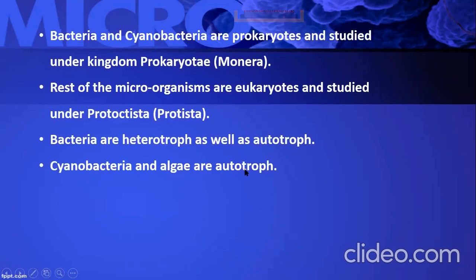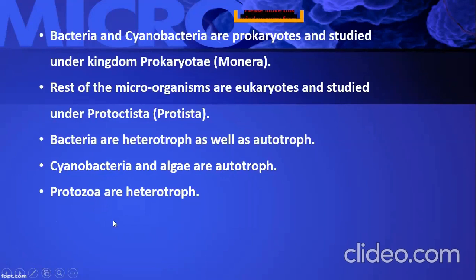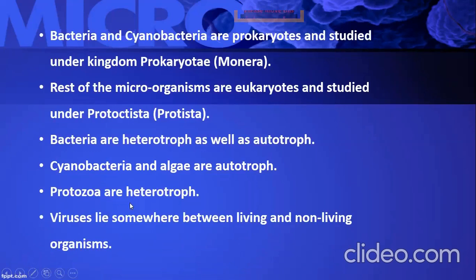Cyanobacteria and algae are autotrophs because they have the green coloring material chlorophyll, due to which they can carry out photosynthesis. Protozoa — such as amoeba and paramecium — are heterotrophs since they lack chlorophyll and cannot synthesize their own food; they depend on other organisms. Viruses lie somewhere between living and non-living organisms, so we can say viruses are the link between living and non-living organisms. They are obligate parasites.